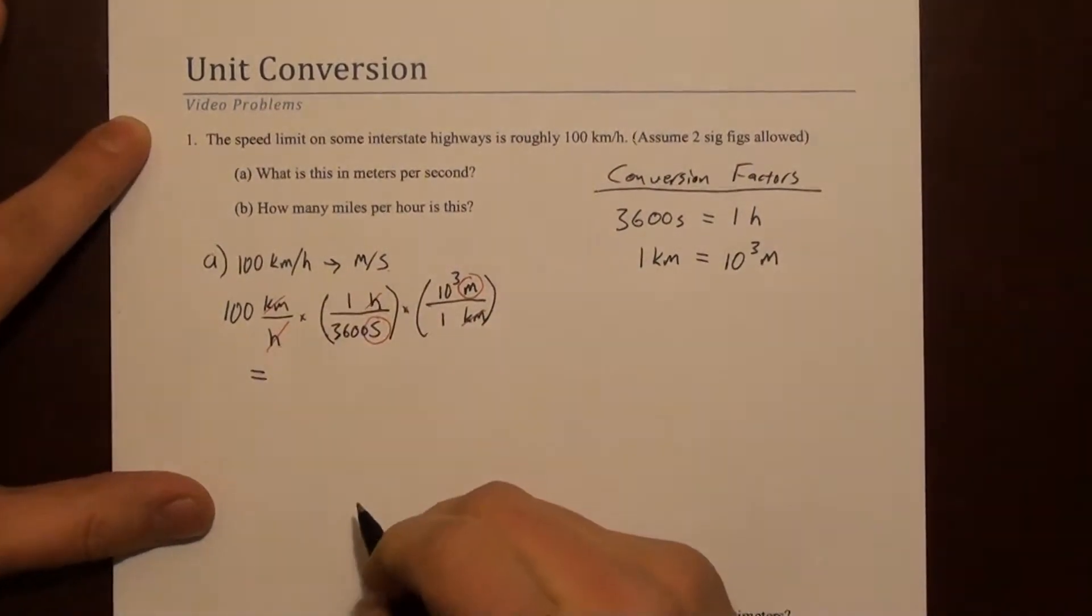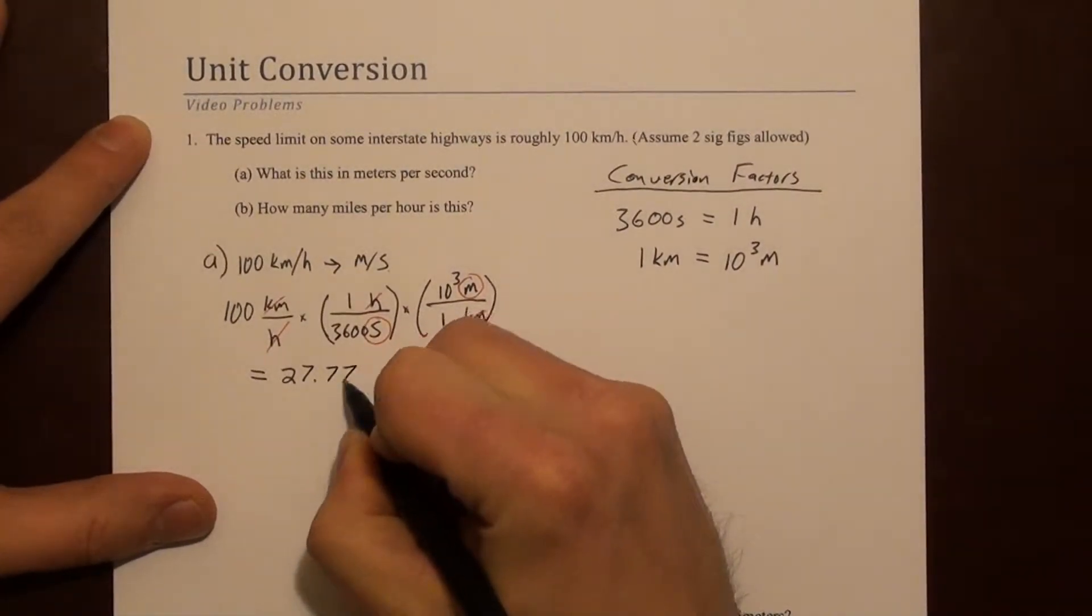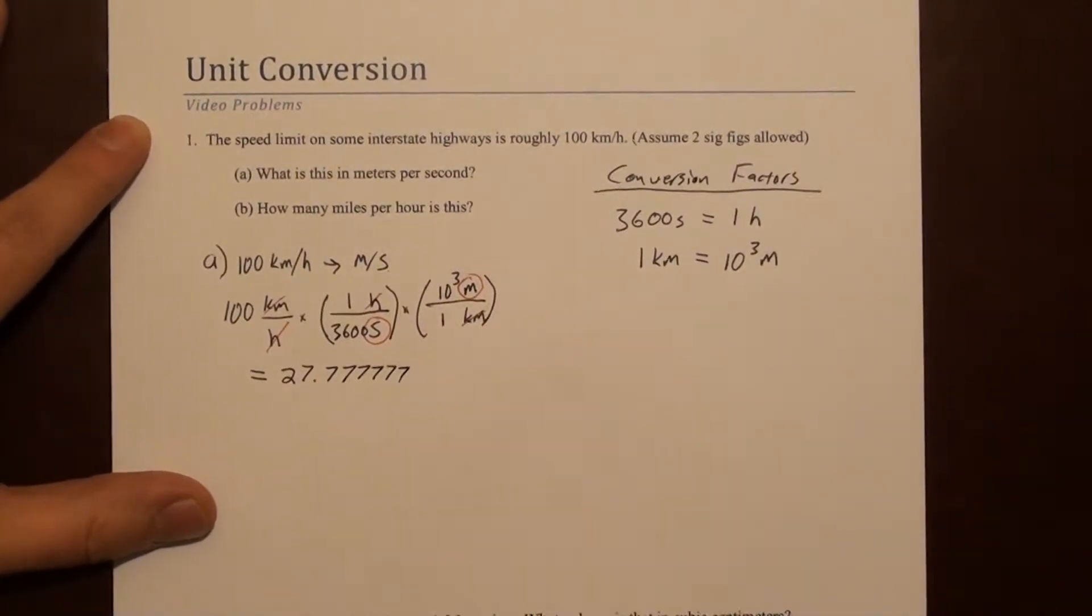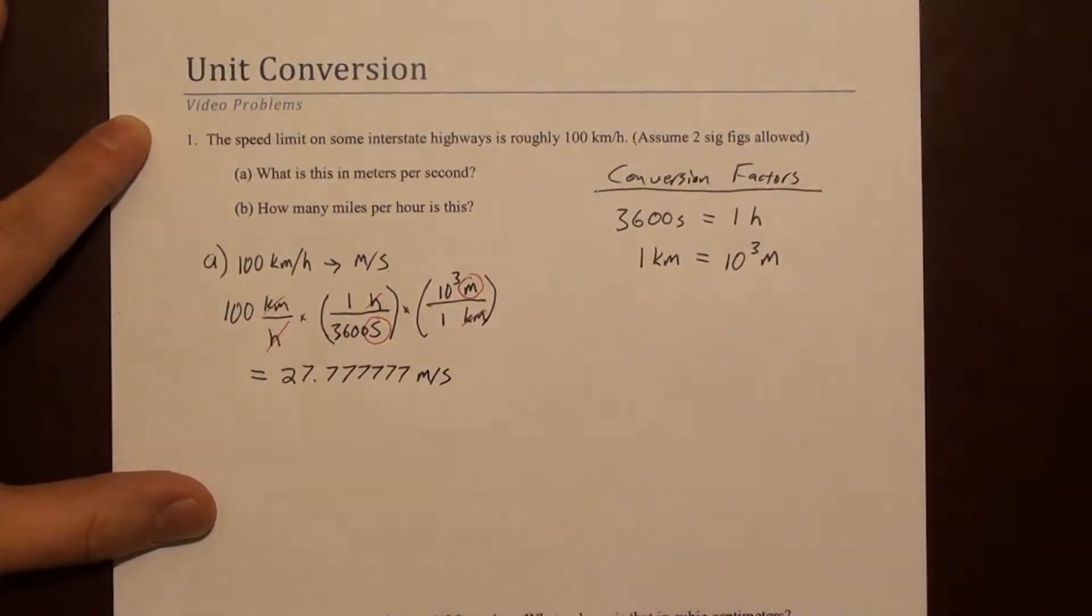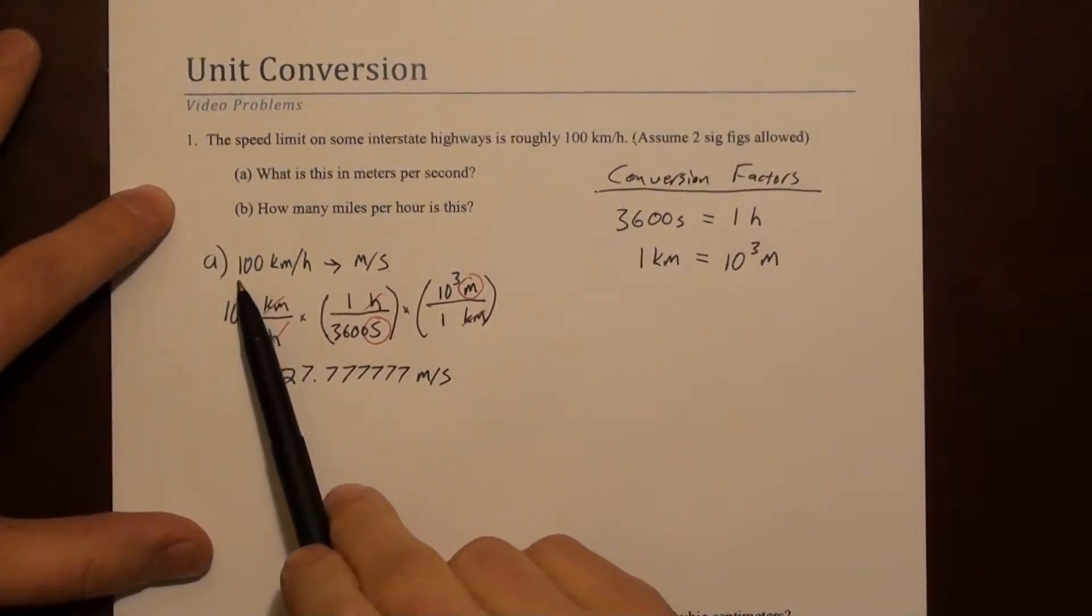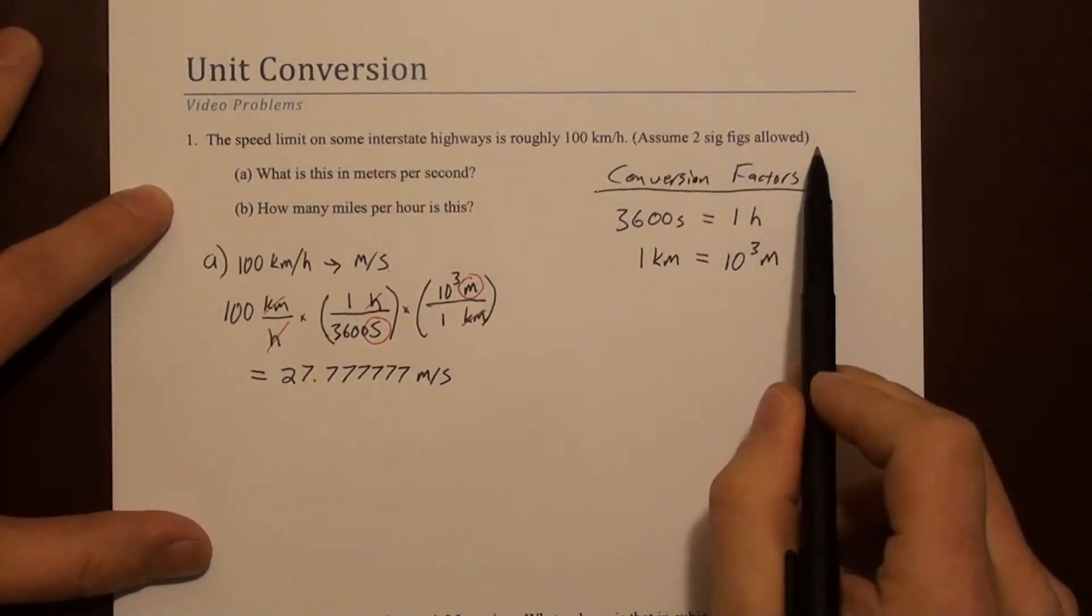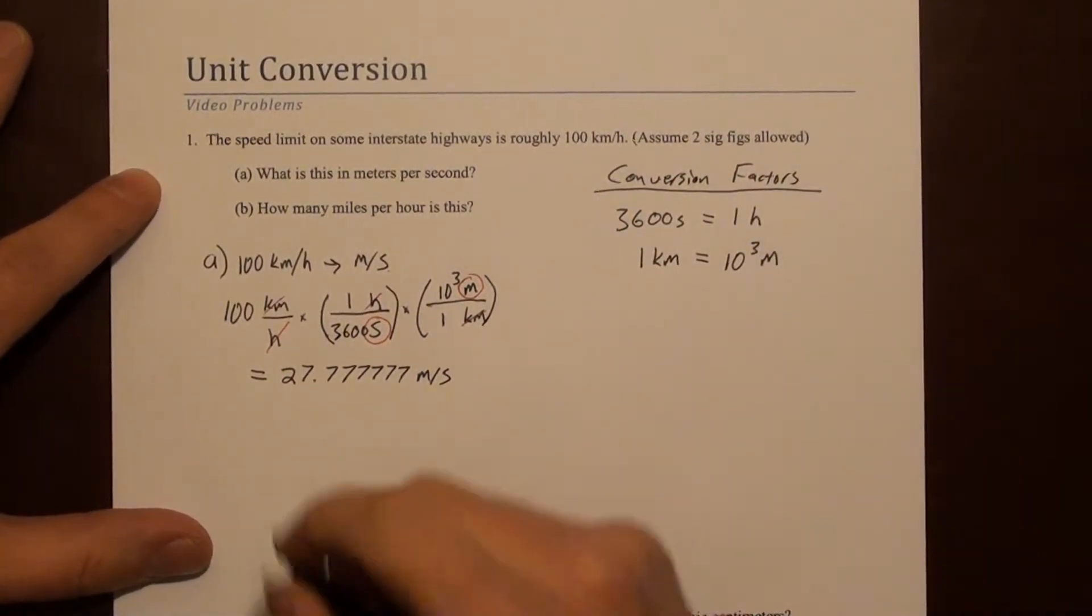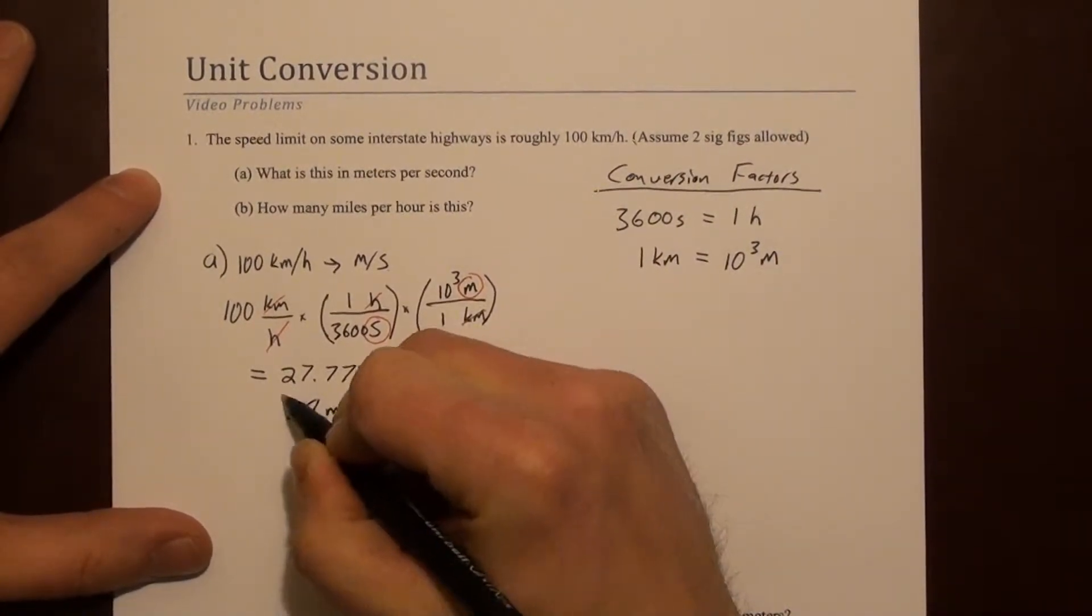So if we do that math, our calculator tells us 27.7777 going on forever in meters per second. So typically we would look at this number and say that's only one sig fig, but if you read the instructions, we're going to allow for 2. So that rounds up to 28 meters per second. Excellent.